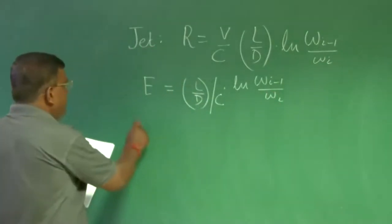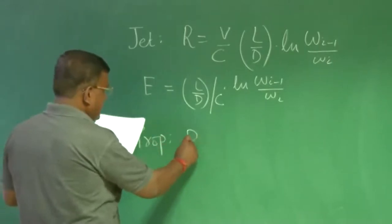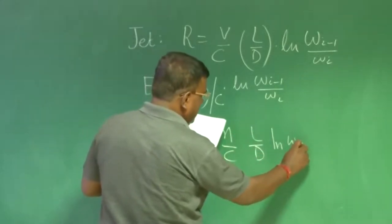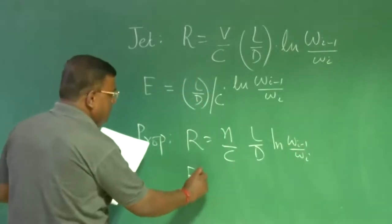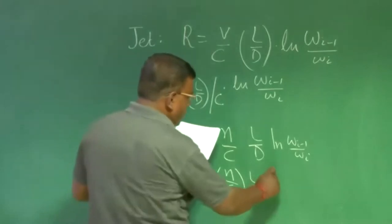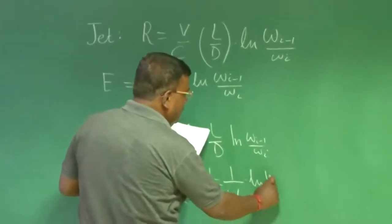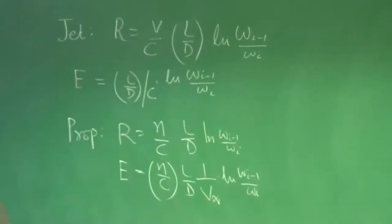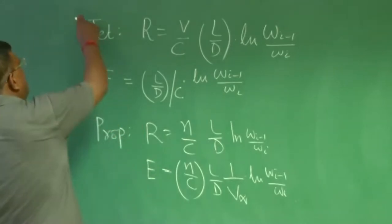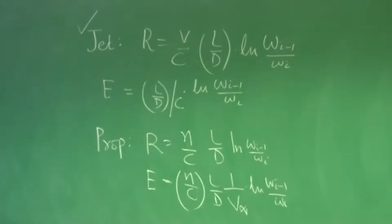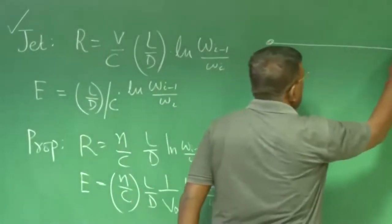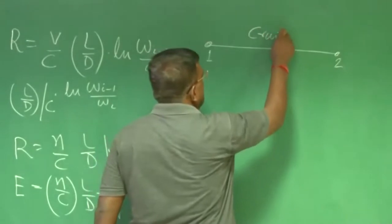Similarly, for a propeller-driven engine, R is eta times L/D times ln(W_i-1 / W_i). And for endurance, it is eta times L/D times (1/V_infinity) times ln(W_i-1 / W_i). This we have derived. Now, let us say we are talking about a jet-engine-driven aircraft moving from station 0.1 to 0.2, which is cruise at a certain speed.